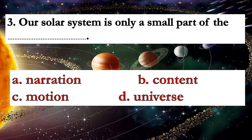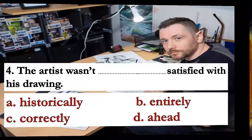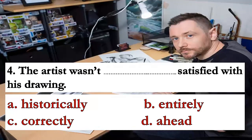Number three: our solar system is only a small part of the _____. The answer is 'universe.' Our solar system is only a small part of the universe. Number four: the artist wasn't _____ satisfied with his drawing. The answer is 'entirely,' which means completely. The artist wasn't entirely satisfied with his drawing.